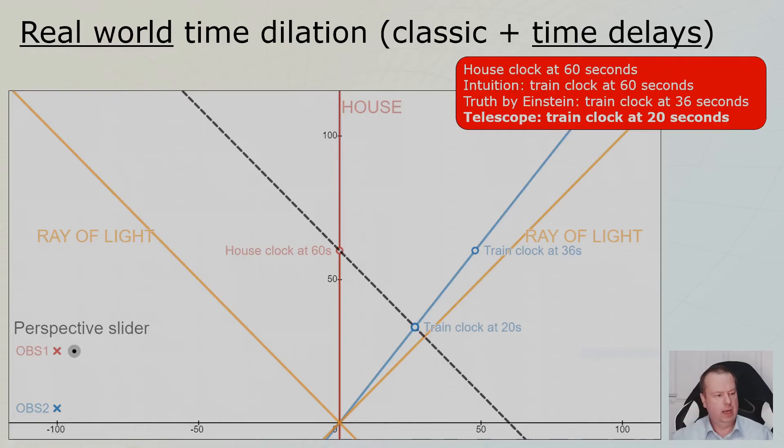Well, here you see the space time diagram again. And I drew a line, a black line at an angle of 45 degrees, because that's the speed of light. And you will see that the light from the train at 20 seconds starts traveling with the speed of light to this telescope. And it takes some time. And when the clock in the house is at 60, that light will reach the telescope. So this is the travel line for the light emitted from the train. And the light goes from that event to the telescope. So at 60, the person in the house will see the blue clock in the telescope being at 20 and not 36. Although 36 is the actual truth. That's classic time dilation. 20 is real time dilation or real world time dilation.